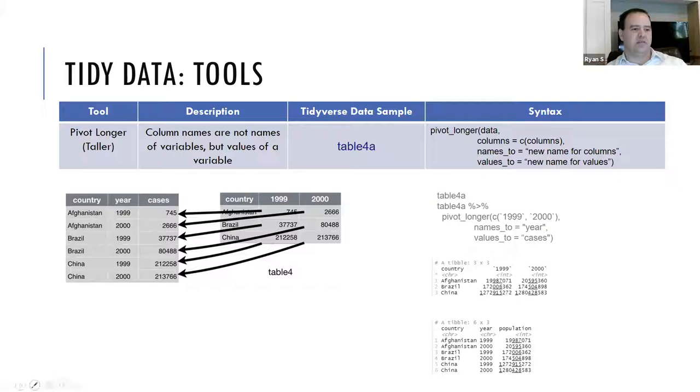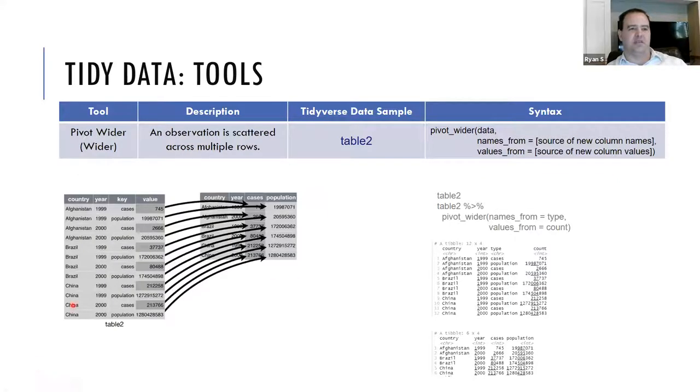So that's pivot longer. And then the inverse of that is pivot wider, which is if you have it, as you can see here, you want to make separate columns, one for cases and one for pollution, then you use pivot wider to move those out like that. And again, these just take some practice to get used to, and it comes pretty easily. You can use table two for this one. And naturally pivot taller, pivot longer, and pivot wider will be really familiar if you're already used to doing pivots like pivot tables in Excel or some other platform like that too.